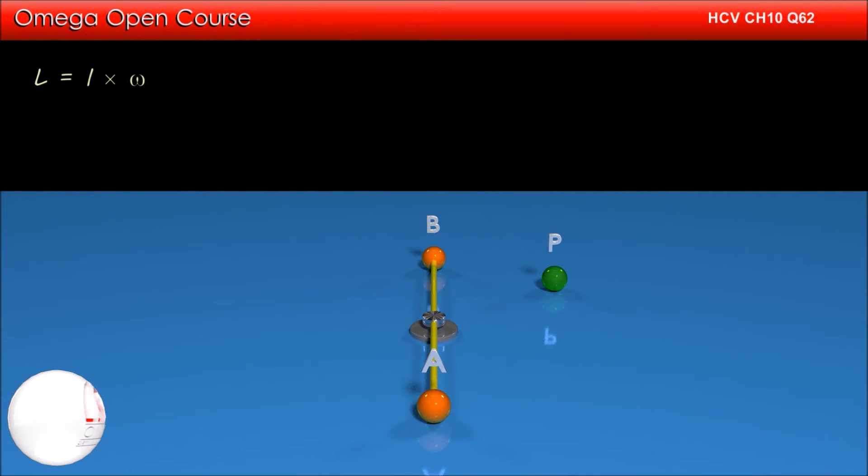Since the particle and the balls are small, they can be considered point masses. But to show the motion better, we have exaggerated their sizes in the animation.